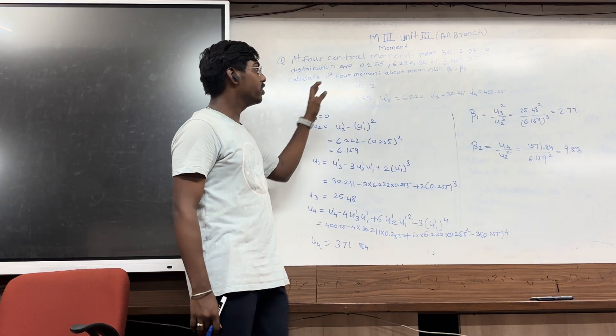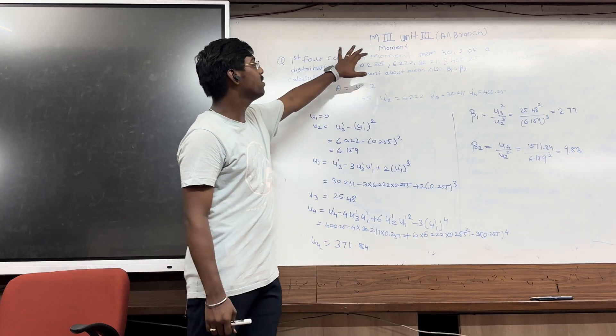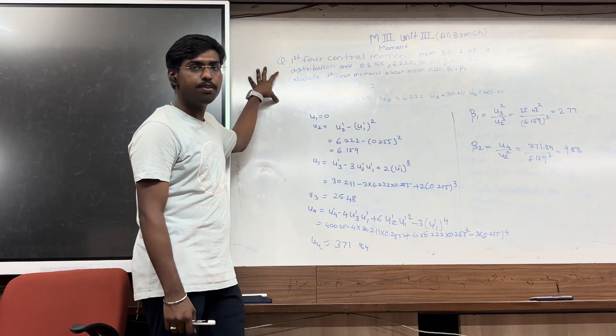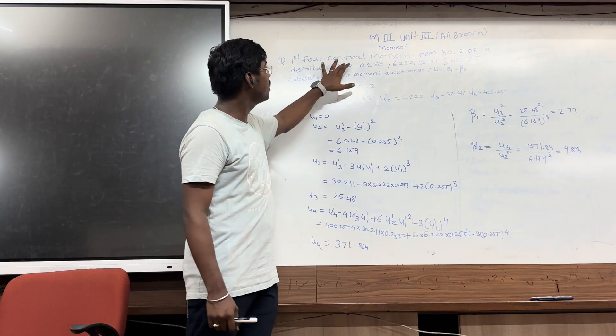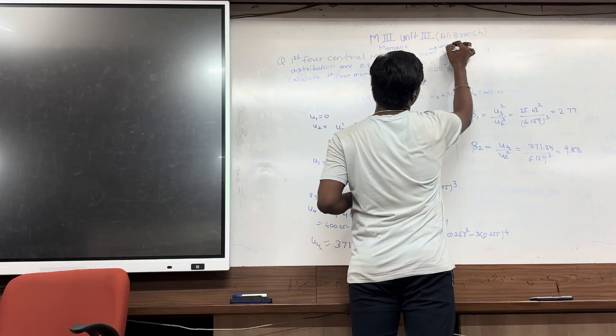So today we are studying element number 4 for all branches. In this unit the topic is movement. The question is given that in the first 4 central movement of the mean, which I am going to say in other words is the working mean.